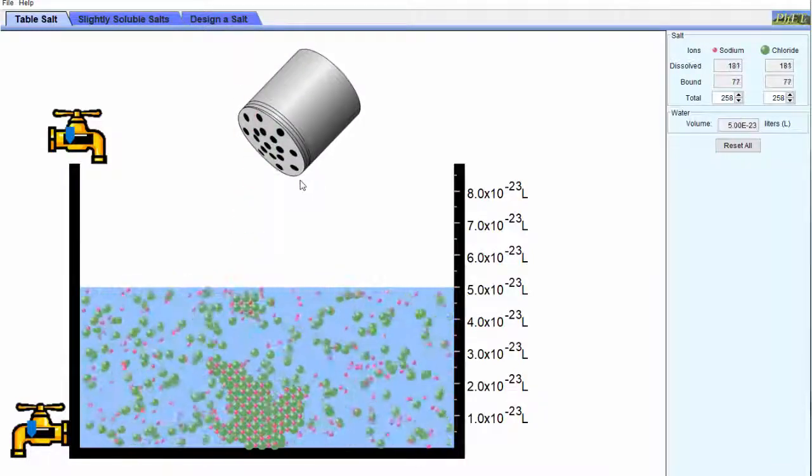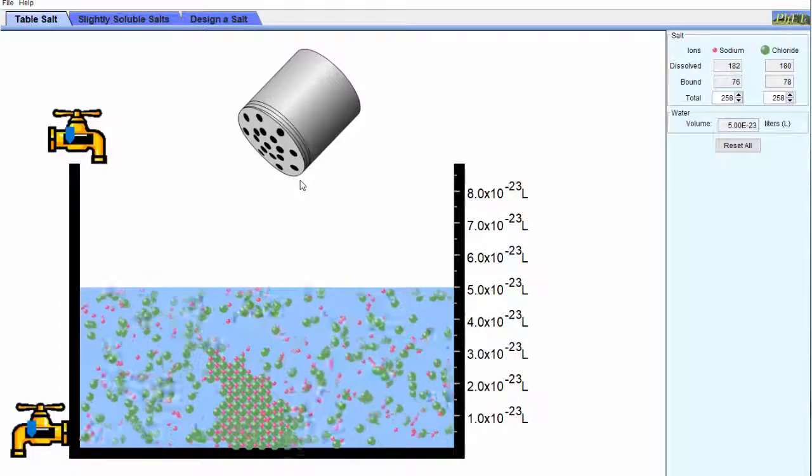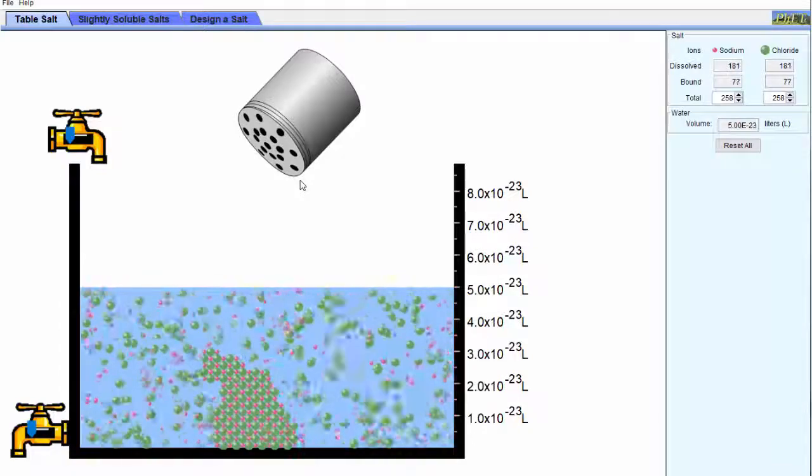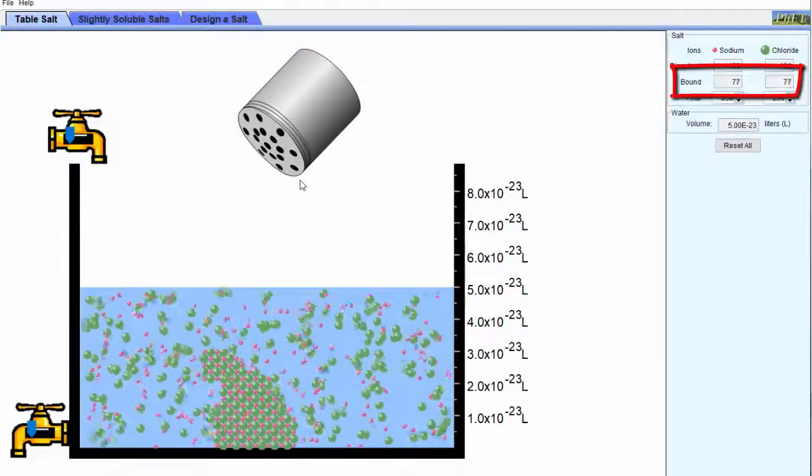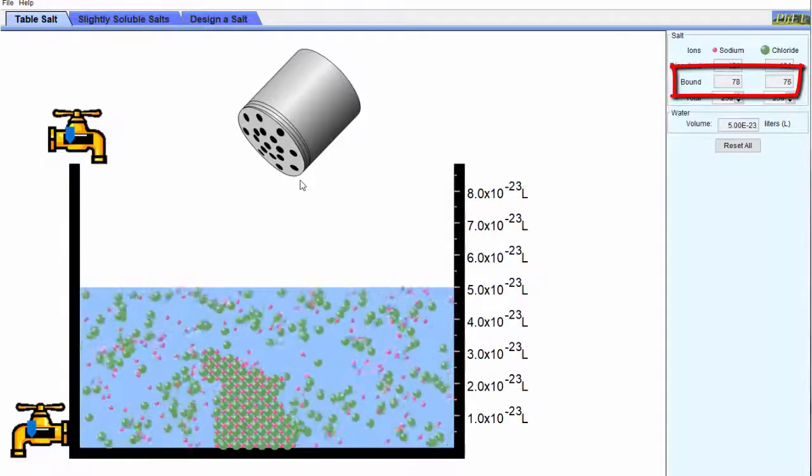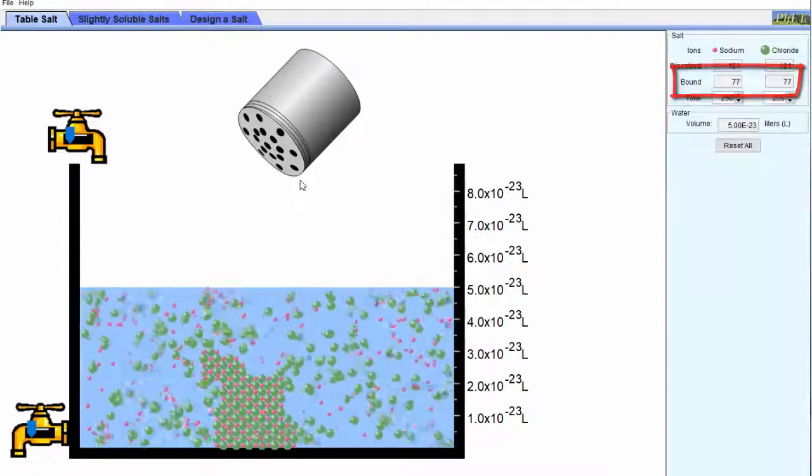This can be observed by the fact that when you add more crystals, they don't dissolve, and also by noticing that the number of bound ions, that's the ones stuck in solid form in the crystals, no longer changes.